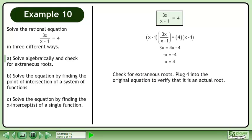Check for extraneous roots. Plug 4 into the original equation to verify that it is an actual root. Plug in 4 for x. Simplify the left side to get 12 over 3. The result is 4 equals 4. The left side equals the right side, so x equals 4 is an actual root.